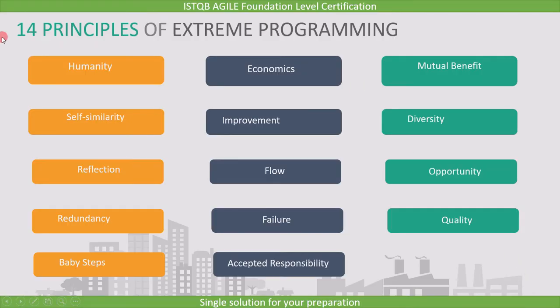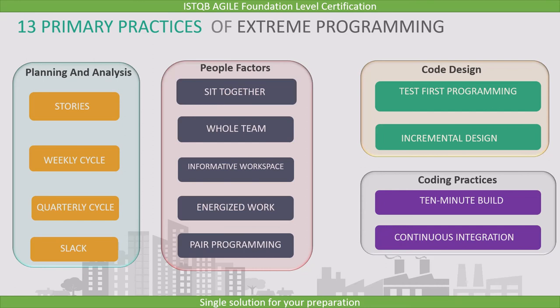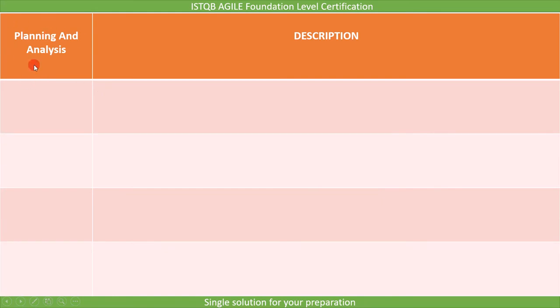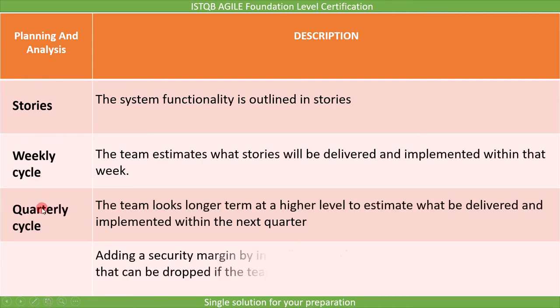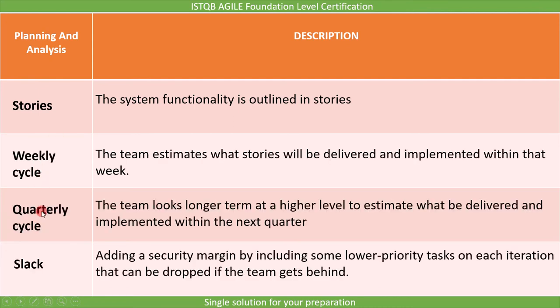With this, all 14 principles are covered. You need to remember the words; the explanation helps you understand their meaning with respect to agile projects. Now let's see the 13 primary practices described by Extreme Programming. I have divided them into four groups to make them easier to remember. The first group is planning and analysis, which includes four practices: stories, weekly cycle, quarterly cycle, and slack.